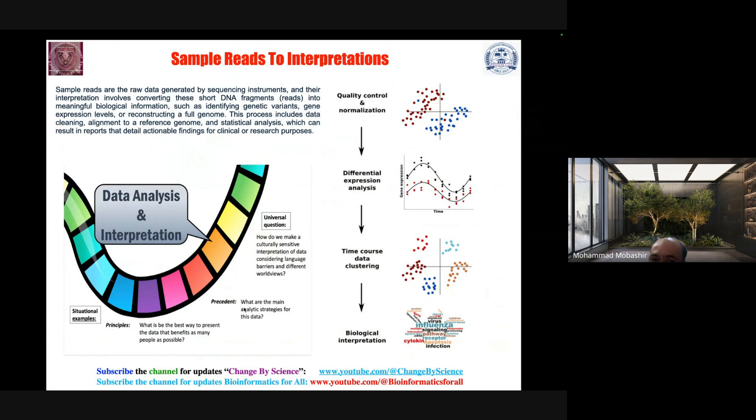For example, principles: what is the best way to present data that benefits as many people as possible? Present what are the main analytic strategies for this data. Universal question: how do we make culturally sensitive interpretation of data considering language barriers and different world views? Sample reads are the raw data generated by sequencing instruments or platforms. Their interpretation involves converting these short DNA fragments or reads into meaningful biological information such as identifying genetic variants, gene expression levels, or reconstructing a full genome.